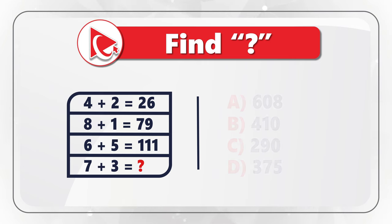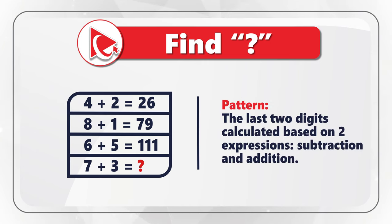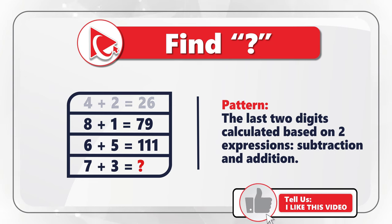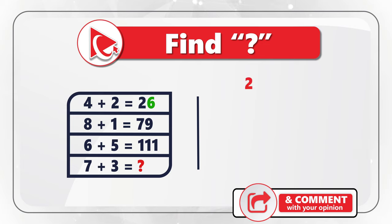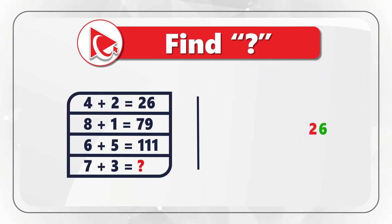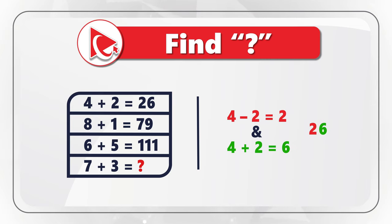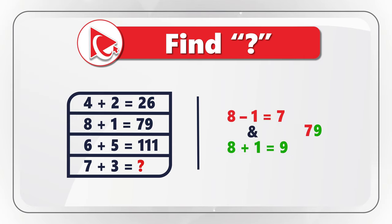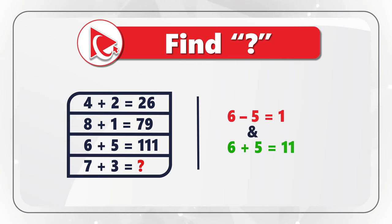We are not dealing with typical math expressions here. The pattern is that the result digits are calculated based on two operations — subtraction and addition. For example, the first expression 4 plus 2 equals 26: the digit 2 in the result is calculated as 4 minus 2, and the digit 6 is calculated as 4 plus 2. For the second expression: 8 minus 1 equals 7, and 8 plus 1 equals 9, giving us 79. The third: 6 minus 5 is 1, and 6 plus 5 is 11, giving us the three-digit number 111.